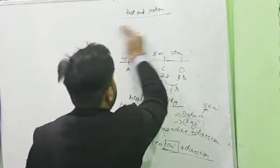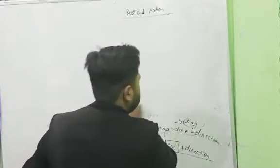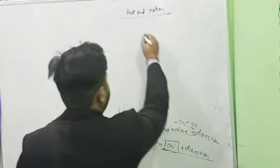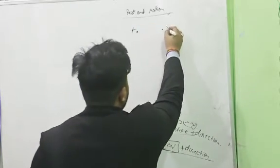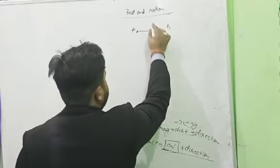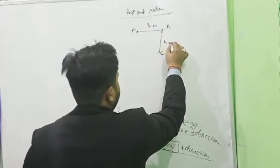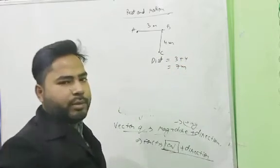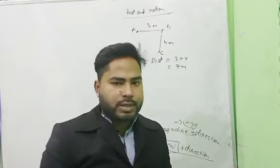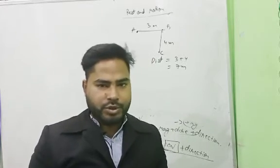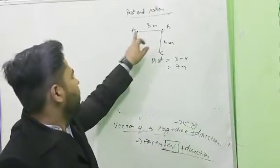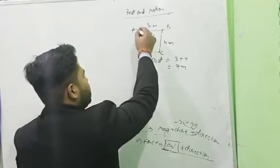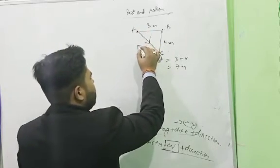Distance means the actual path covered by the body. If we go from point A to B to C, the distance A to B is 3 meters and B to C is 4 meters, so total distance is 3 plus 4 equals 7 meters. But displacement is the shortest distance between the initial position and the final position. Where we start is the initial position and where we stop is the final position.